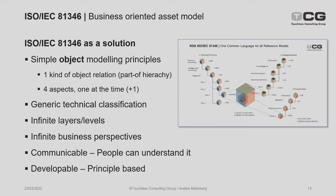It's not a complex information modeling scheme — it's a very simple scheme with one kind of object relation only and one kind of object. We only have objects or systems, and they have one parent, several children — a part-of hierarchy. We use four aspects, one at a time plus one, to express those relations. It's based on very generic technical classifications, supports an infinite number of layers or levels of detail, and as many business perspectives as you need. It's very communicable and principle-based, so it can be further developed as your information needs grow.